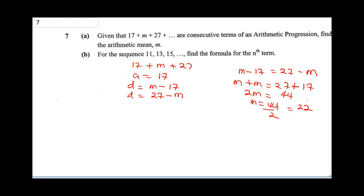Knowing that our m is 22, therefore our AP is going to be 17, 22, 27. Now you can see that the common difference is 5. So d is 5. This is what our AP looks like. Now it says find the arithmetic mean.